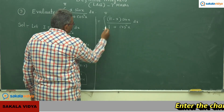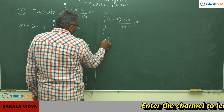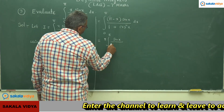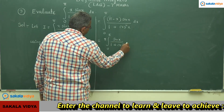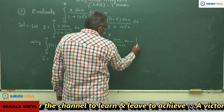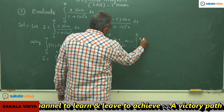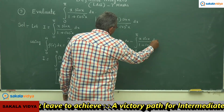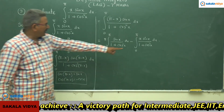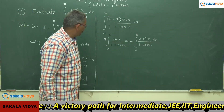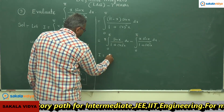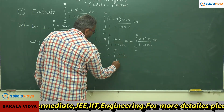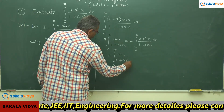Now this can be written as: integral from 0 to π with π taken common, giving π times integral from 0 to π of sin(x) / (1 + cos²x) dx, minus integral from 0 to π of x·sin(x) / (1 + cos²x) dx. Just observe — the second integral is again the same problem, which is nothing but I. So I equals π times integral from 0 to π of sin(x) / (1 + cos²x) dx minus I.